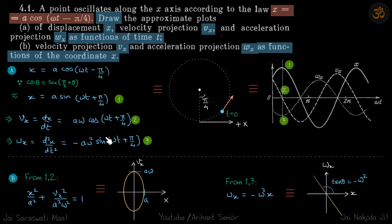This is x, v, and acceleration versus time. Now we need to plot vx versus x. From this we will eliminate time - square and add to get rid of the time - and we get the equation x squared by a squared plus vx squared by a squared omega squared equals one, which is the equation of ellipse. So vx versus x is an ellipse. Here also you can see when x is maximum then velocity is zero, when x is zero then velocity is maximum.